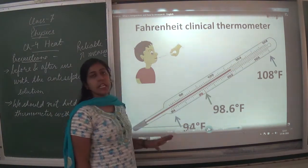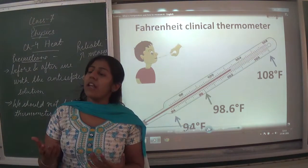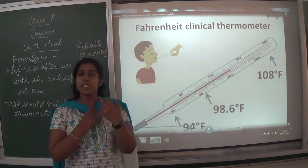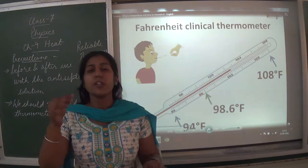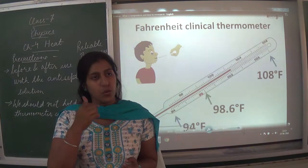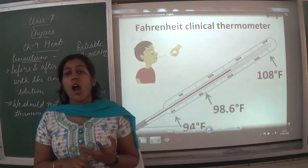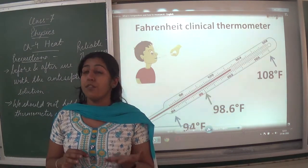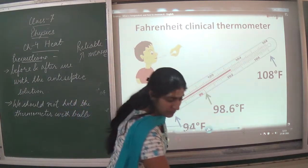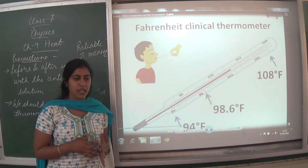The Fahrenheit scale is the scale we usually use at home. When a family member is not feeling well, they take the thermometer, keep it in the mouth. For small toddlers, it should be placed under the elbow. We check the temperature and say 100 to 104 degrees — that is the Fahrenheit scale, not Celsius. We usually measure our body temperature in Fahrenheit at home.